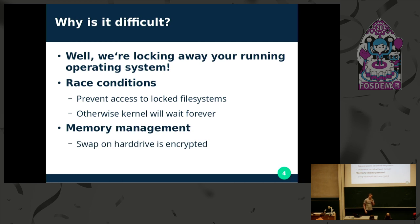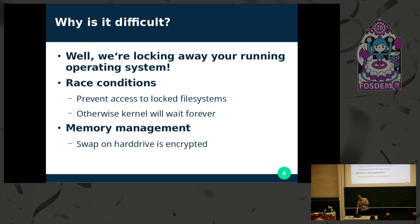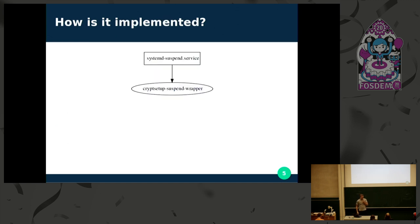There's also the thing that usually memory management is transparent, which is great — you don't have to care if you're developing an application. But since the swap space is located on your hard drive, which we will encrypt and lock, and the memory is actually unencrypted, we have to be sure what part of the memory is located where. Since this is the dev room, I'm going to dive right into the details of how we implemented this.